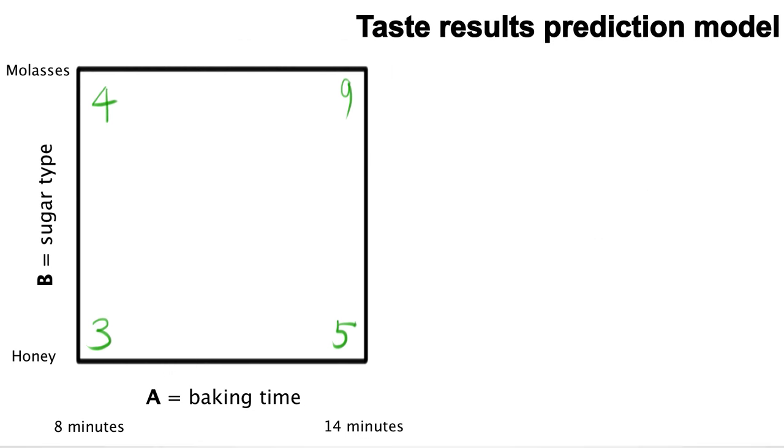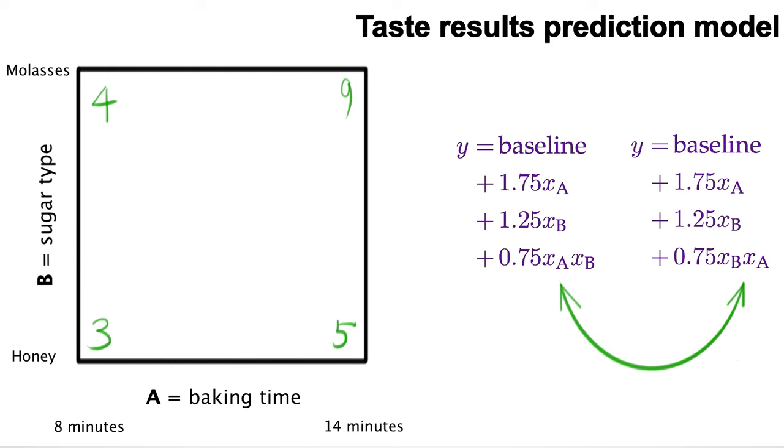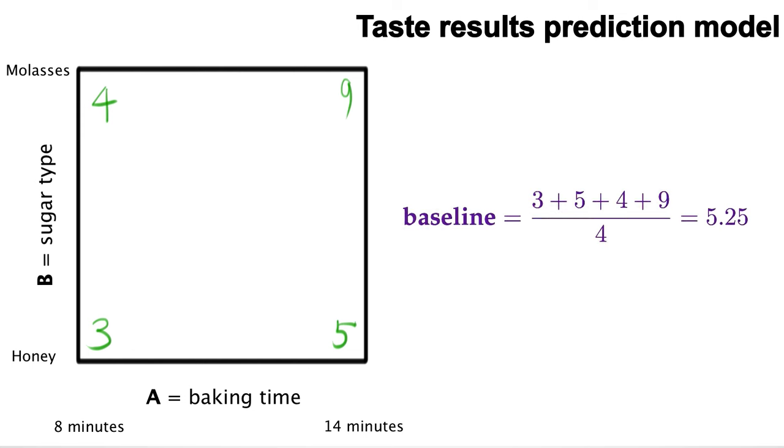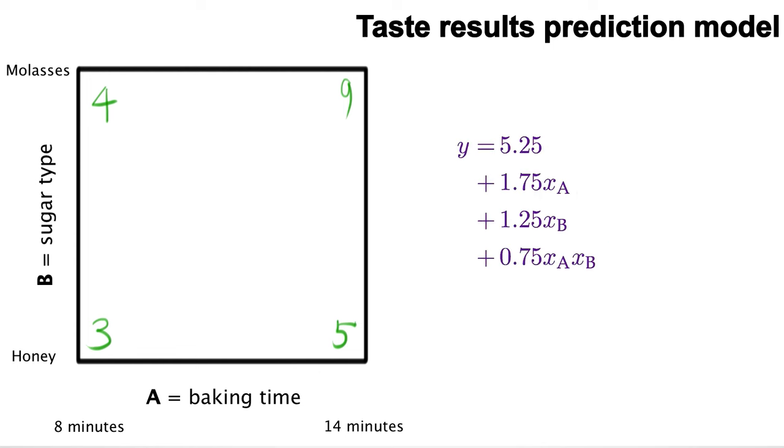So let's go ahead and add that term to our prediction model. So far, our prediction for taste is 1.75 times xA plus 1.25 times xB. The interaction value was 0.75, and we multiply that by xA and xB. It is symmetrical and multiplicative. There's only one other term missing from this prediction equation, and that's our baseline taste. That baseline is the average of all four values. So 3 plus 5 plus 4 plus 9, and then divide all of that by 4. That's equal to 5.25, and we'll add that number right up here at the front.